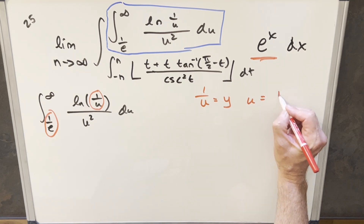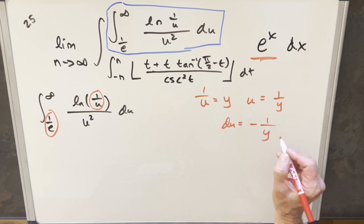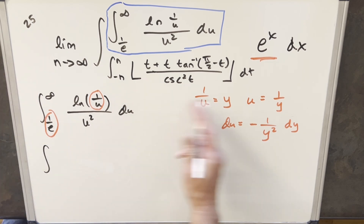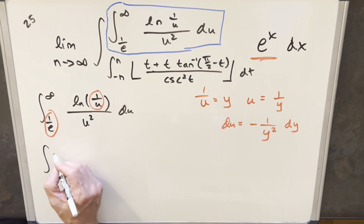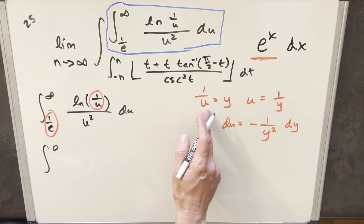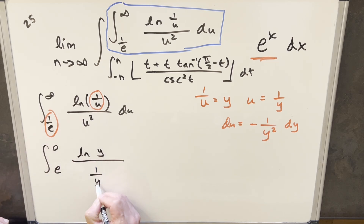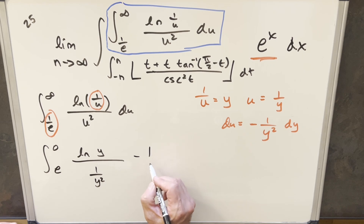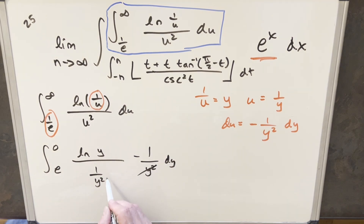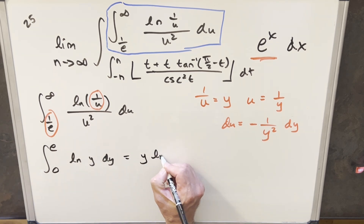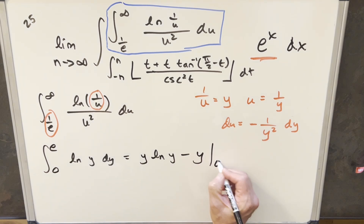Rearranging, u = 1/y. Taking the derivative, du = −1/y² dy. Substituting the bounds: plugging in infinity gives y → 0 for the upper bound; plugging in 1/e gives y = e for the lower bound. The integrand becomes ln(y) · (1/y²), and our du is −1/y² dy. The y² terms cancel, leaving just 1 in the denominator. Taking the minus sign and flipping the bounds, we now integrate ln(y) from 0 to e. Using the formula, the integral of ln(y) is y·ln(y) − y, evaluated from 0 to e.